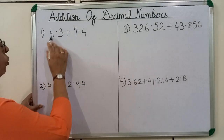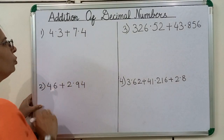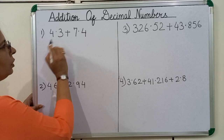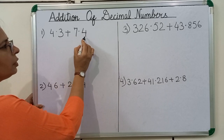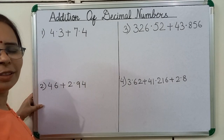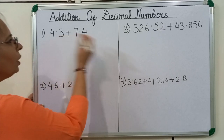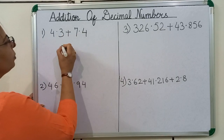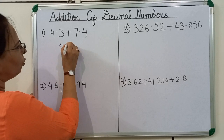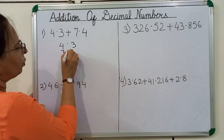First we will add 4.3 and 7.4. You can see here after the decimal there is 1 digit, and here also after the decimal 1 digit, which means these are like decimals. Now we will arrange these decimal numbers according to their place value: 4.3 and 7.4.